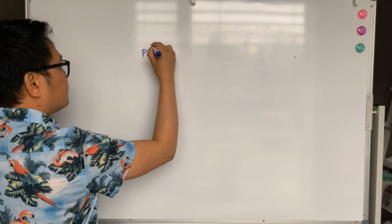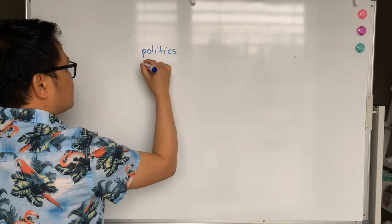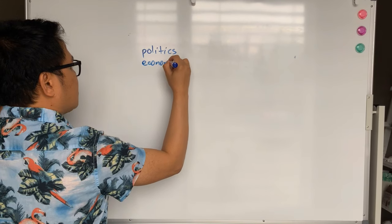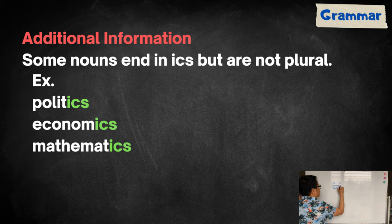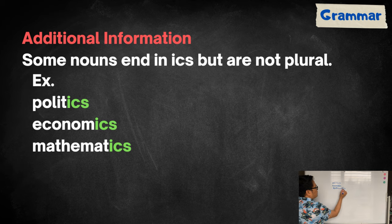Additional information, some words end in ICS but are not plural. For example, politics, economics, and mathematics. As you can see there, these words end in ICS but they are not plural.